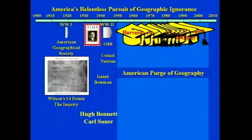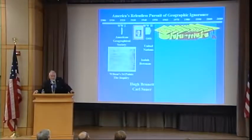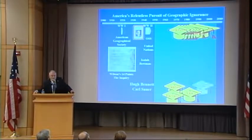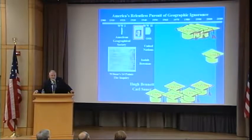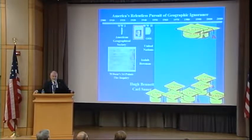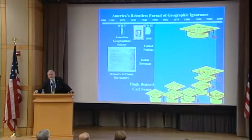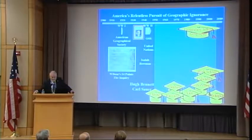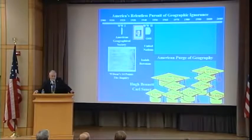But a strange thing happened here in the United States. After all those wonderful accomplishments of the first half of the 20th century, in 1948 Harvard abolished geography. Then Stanford, Yale, Penn, Northwestern, Chicago, Columbia, Michigan. Then high school geography started disappearing. Only 16 states require high school geography today. In elementary school, it was melded into that mishmash called social studies that doesn't do much for any of the component fields. That is what I refer to as the American purge of geography.